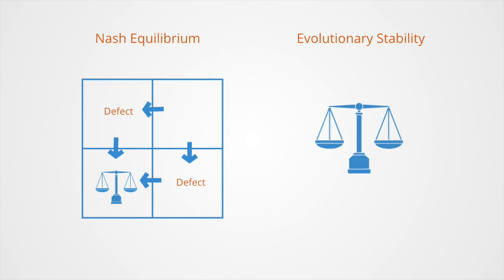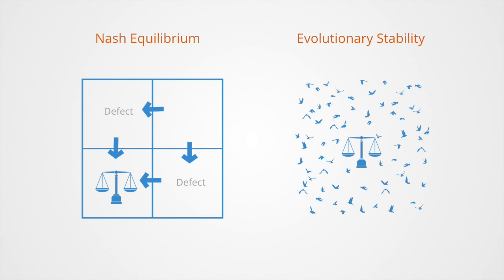An evolutionary stable strategy is a state of game dynamics where in a very large population of competitors, another mutant strategy cannot successfully enter the population to disturb the existing dynamic.